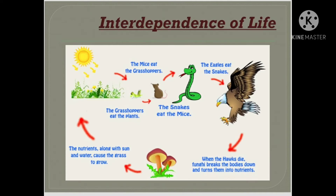The grass gets energy from the sun and the grasshopper is able to eat it and live. Similarly, the snake gets its food only if the birds, frogs, and mice live by eating the grasshopper. This dependence of living and non-living natural things on each other makes a web of life.